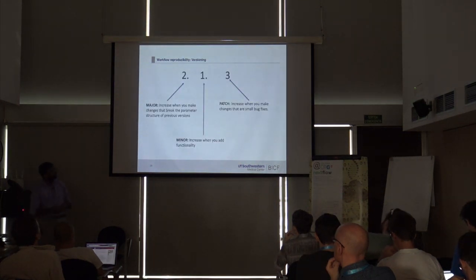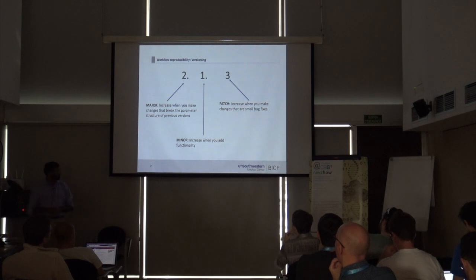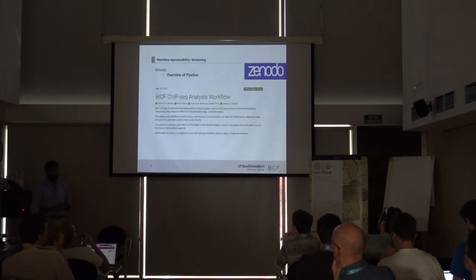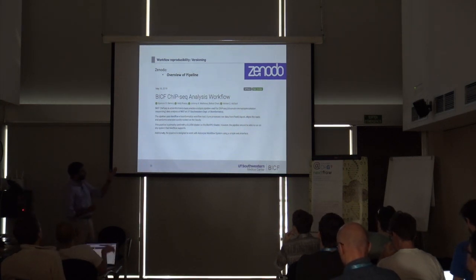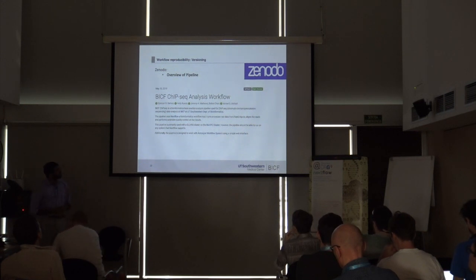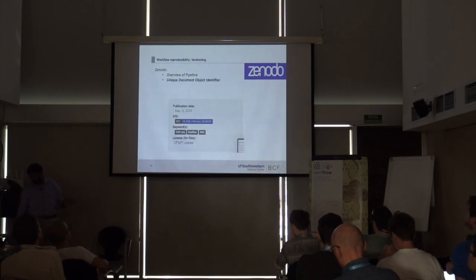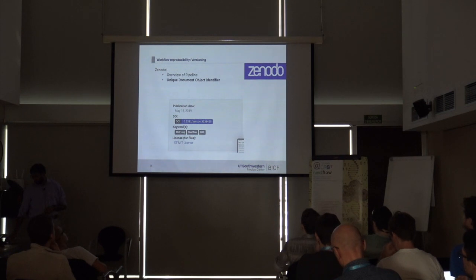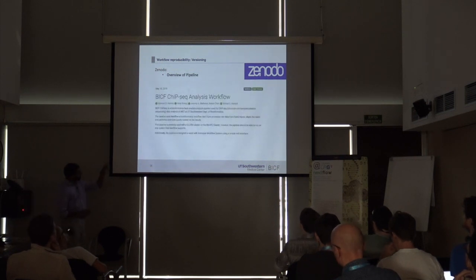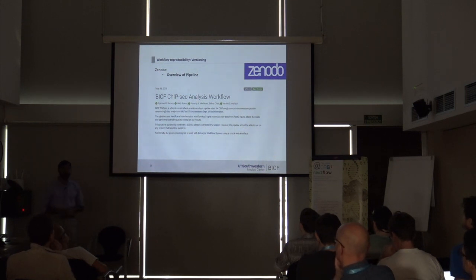We do major, minor, and patch releases for bugs, managing everything in our local GitLab instance, and then pushing everything to Zenodo. The benefit is that we give an overview of the pipeline that everyone can cite for publications, and we give it a unique object identifier. Importantly, we link all pipeline contributors to their OrcID, so they get credit — ensuring that everyone who contributed to the pipeline gets cited when the pipeline is cited.